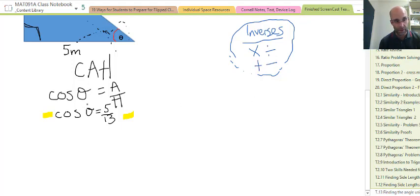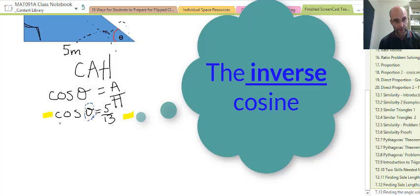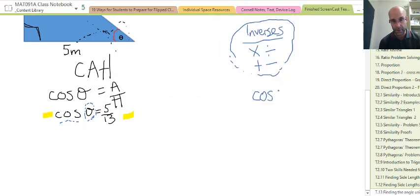What we need to do is get this angle by itself - theta. We have to take the inverse of cosine. That's got a special name: inverse cosine. We write that with a little raised superscript symbol negative 1. We call that the inverse cosine, or inverse cos for short, and that can be found on your calculator.